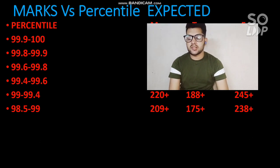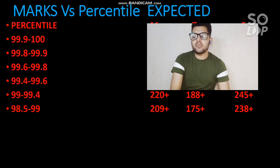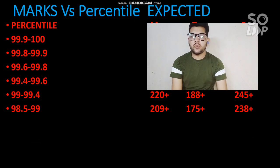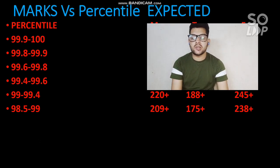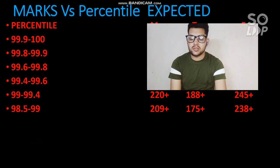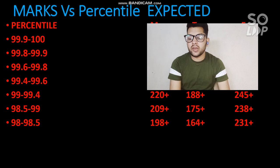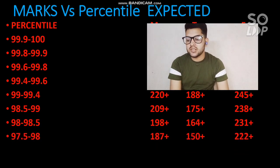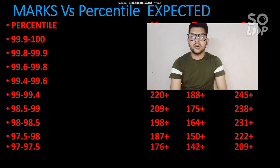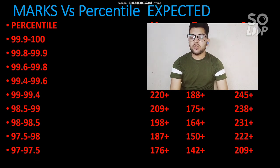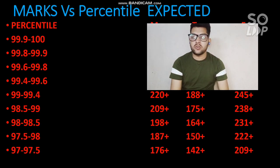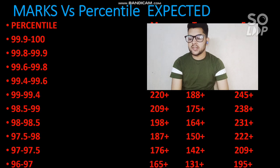This information is based on the last attempt, considering the difficulty level of the next attempt and the competition, since students have had more preparation time. You can expect more competition and increased difficulty. For 98 to 98.5 percentile, 198 plus marks will be required. For 97.5 and above, 187 or above marks for moderate paper. For 97 to 97.5, marks would be 176 plus. For tough and easy papers, check sideways by pausing the video.